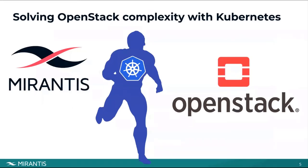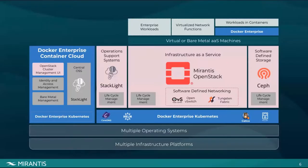How exactly is Mirantis deploying and running OpenStack on top of Kubernetes? We achieve that through integration with our new line of products called Docker Enterprise Container Cloud — a Kubernetes-as-a-service distribution and toolset. OpenStack relies on it just like any other typical Kubernetes workload, to manage and control the underlying infrastructure: hardware, host operating system, the Kubernetes underlay cluster itself, and add-ons. As OpenStack developers, we rely on the capabilities Kubernetes provides and deploy and manage OpenStack just like any other Kubernetes workload.